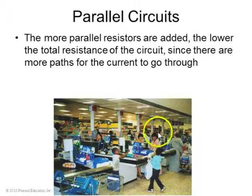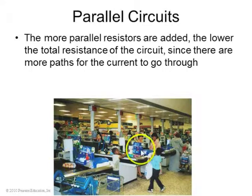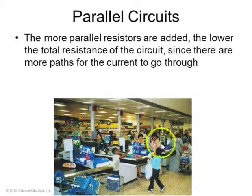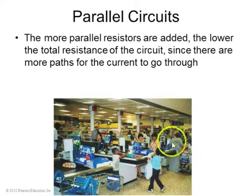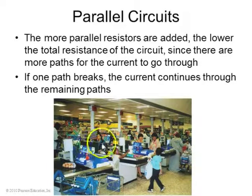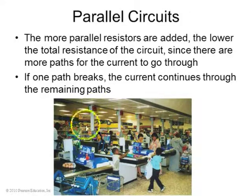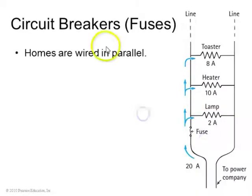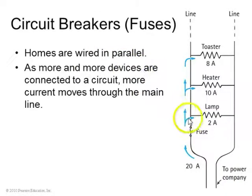An analogous situation for parallel circuits is lineups at the grocery store. It takes time to get through each lineup, but as you add more lineups, there's lower total resistance since you can go through different paths. And if one path breaks — if there's a price check in one aisle — then people can continue through the remaining paths.